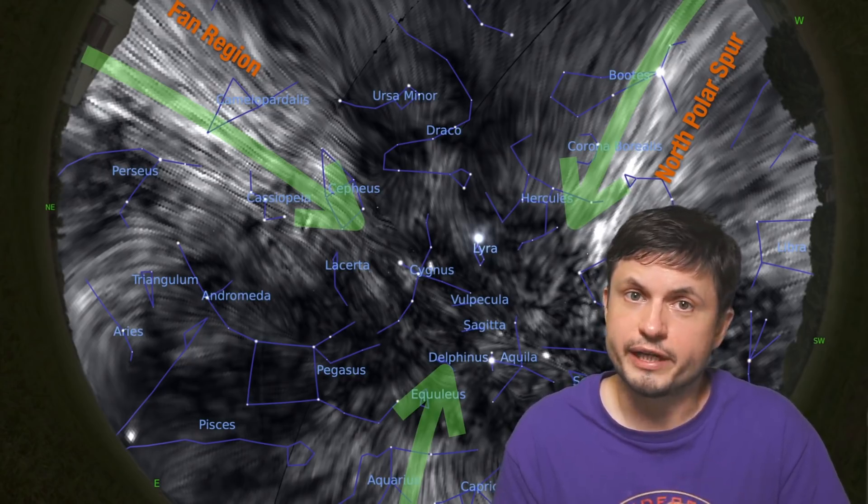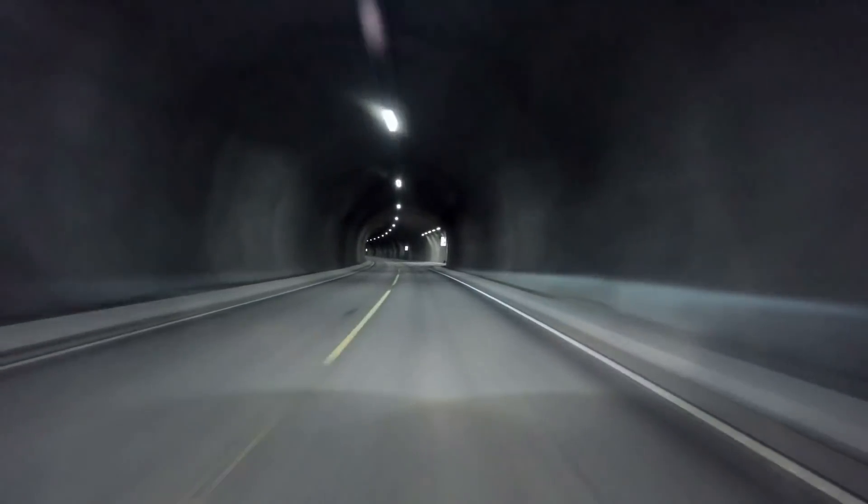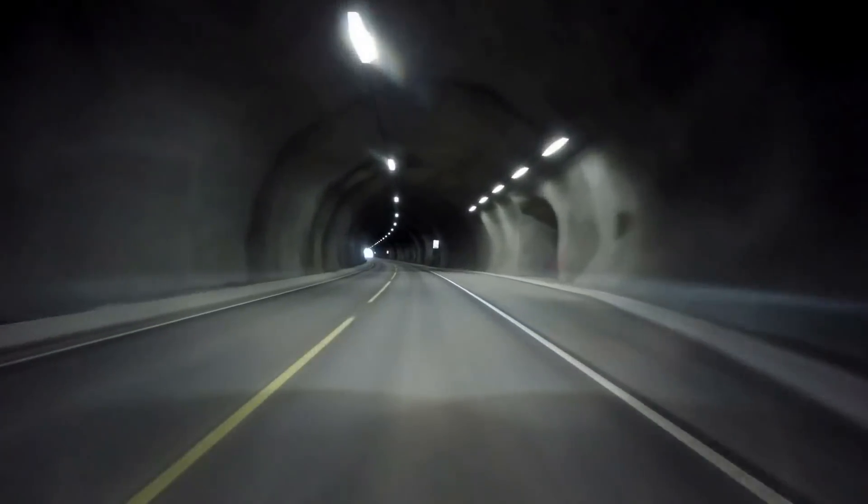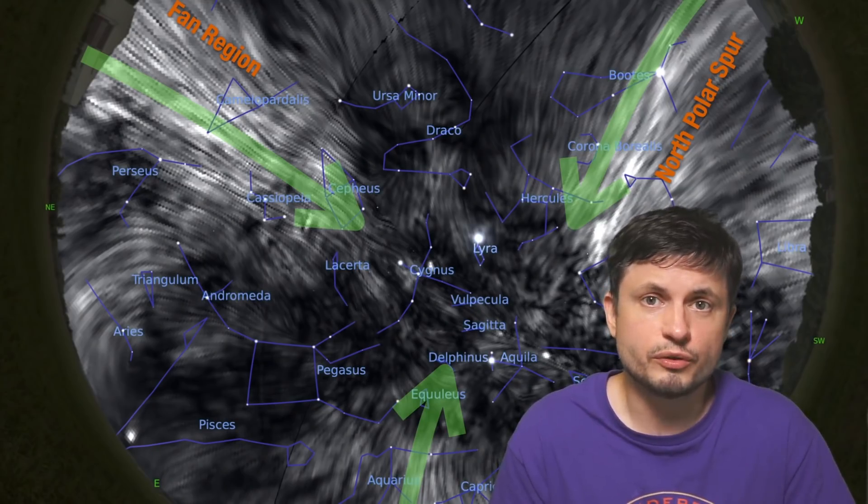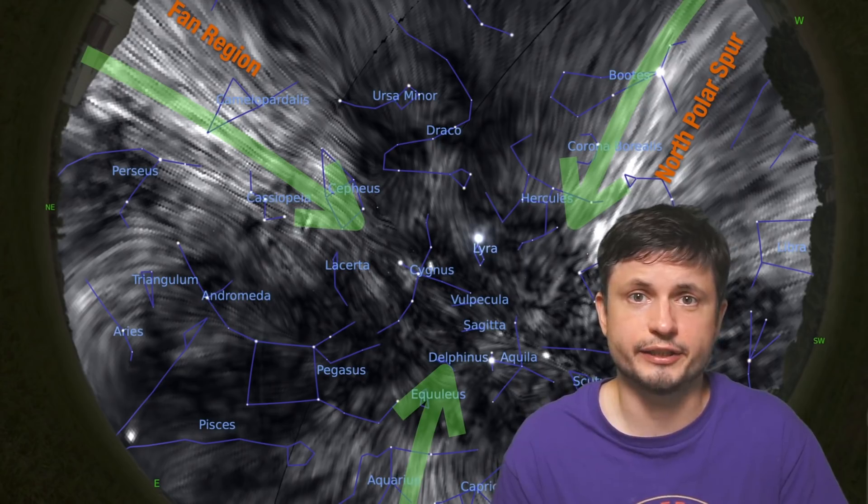But once again, the clarification here is that we're not moving through the tunnel in this way. We're not actually flying through the tunnel. In this case, it's a lot more likely that the tunnel is actually stationary and is moving with planet Earth across the galaxy. But some of these particles are definitely following the magnetic lines across the galaxy as well.